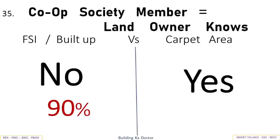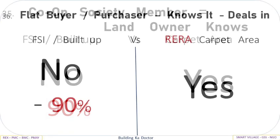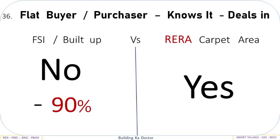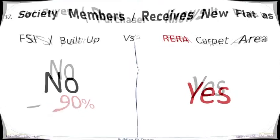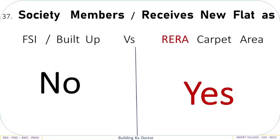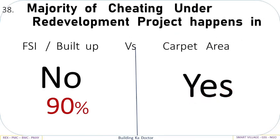Cooperative society members, who are landowners, know FSI Built-Up: No — 90%, vs Carpet Area: Yes. Flat buyers and purchasers know and deal in FSI Built-Up: No — 90%, vs Carpet Area: Yes. Society members receive new flats as FSI Built-Up: No, vs Carpet Area: Yes. Majority of cheating under redevelopment projects happens in FSI Built-Up: No — 90%, vs Carpet Area: Yes.